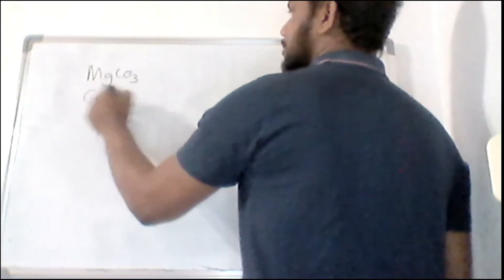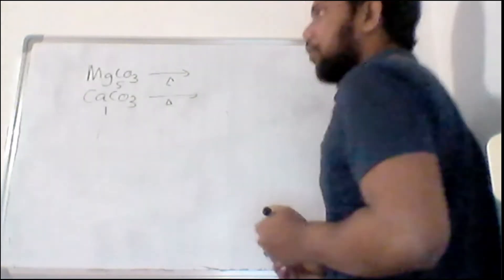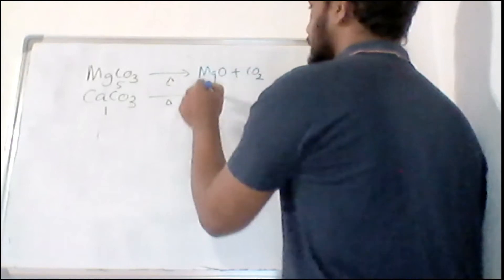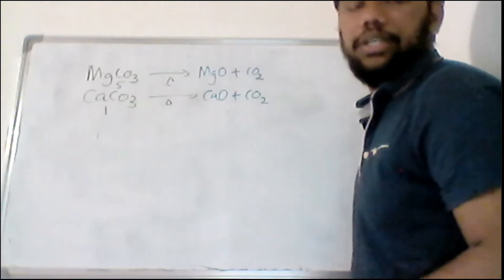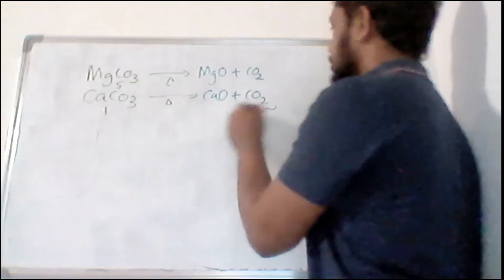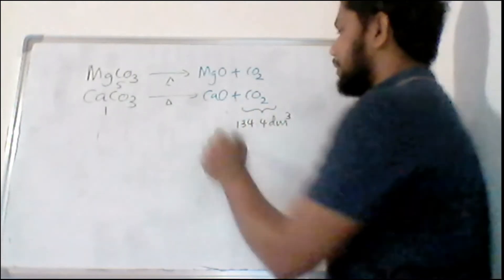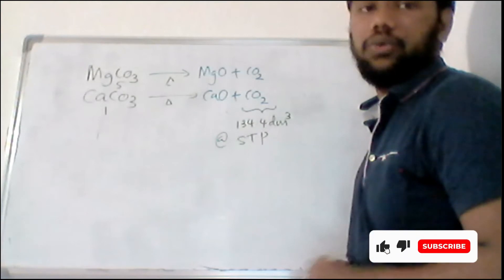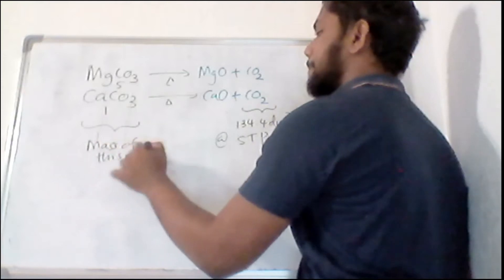We have magnesium carbonate and calcium carbonate in a ratio of 5:1. We are going to heat this. Carbonates of Group 2 decompose, but Group 1 carbonates like potassium and sodium do not. So heating will produce magnesium oxide and CO₂, and also calcium oxide and CO₂. The total volume of CO₂ formed was 134.4 dm³ at STP — standard temperature and pressure.